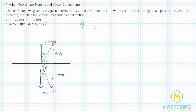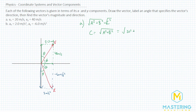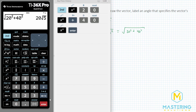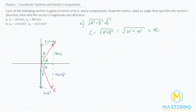For part a, we'll use the Pythagorean theorem to find the magnitude: a² + b² = c². Solving for c, we get c = √(a² + b²). The magnitude of vector v is the square root of 20² + 40², which gives us 20√5, approximately 44.7, rounding up to 45 meters per second.